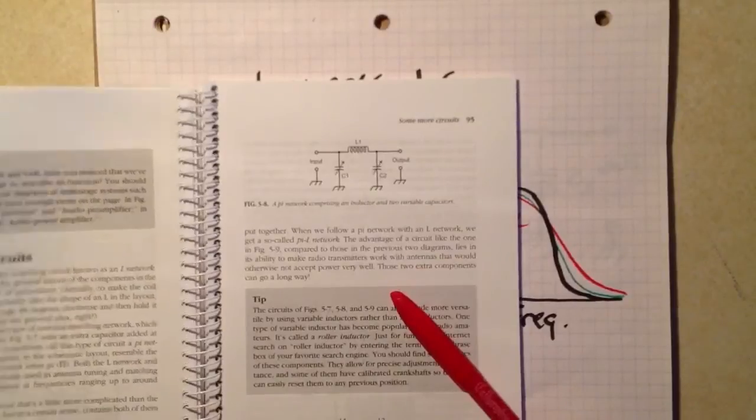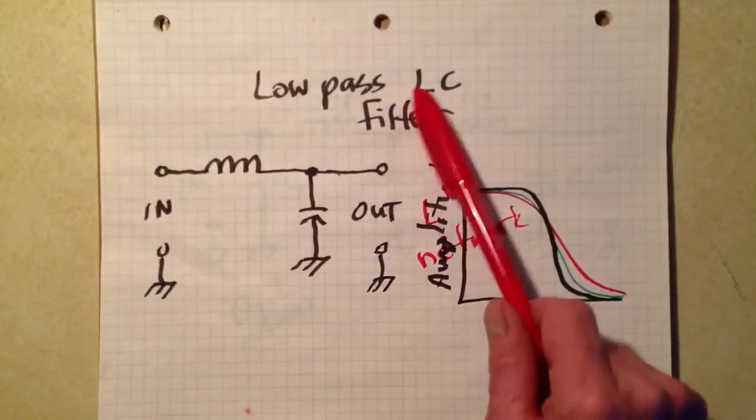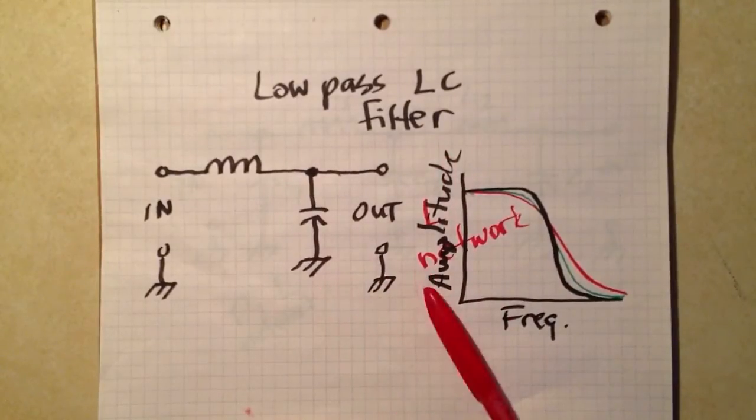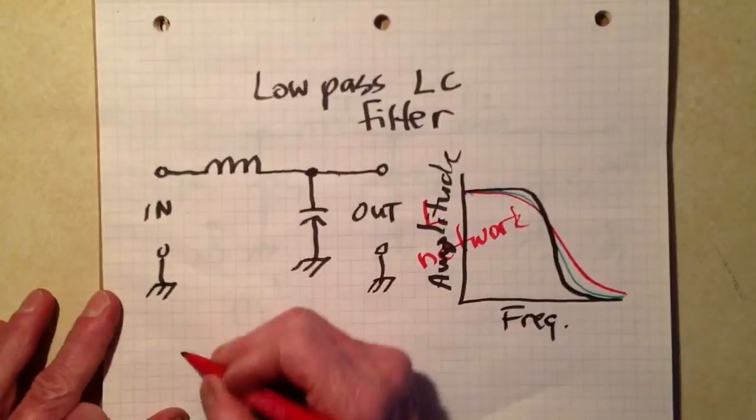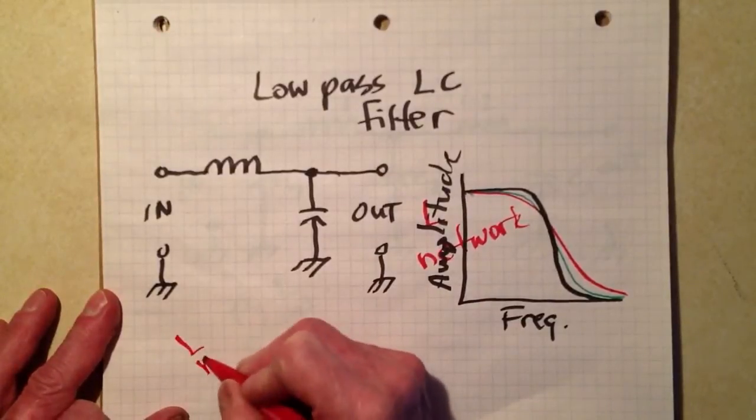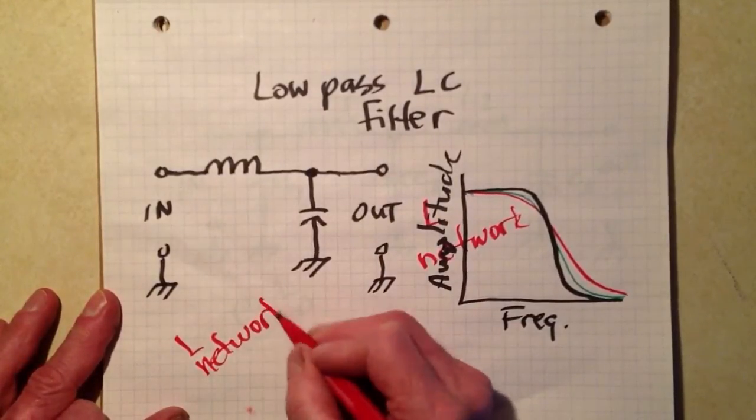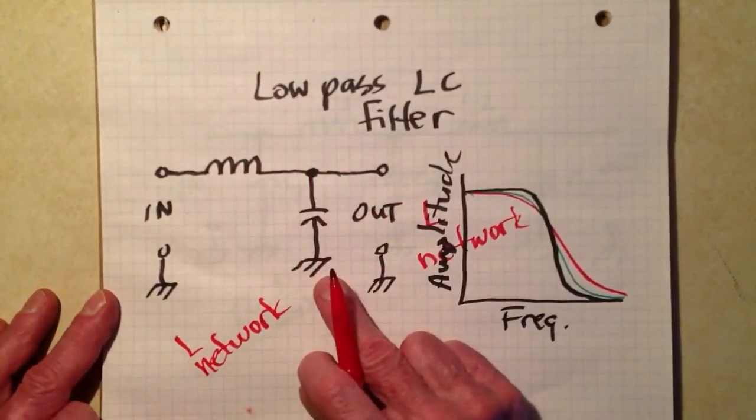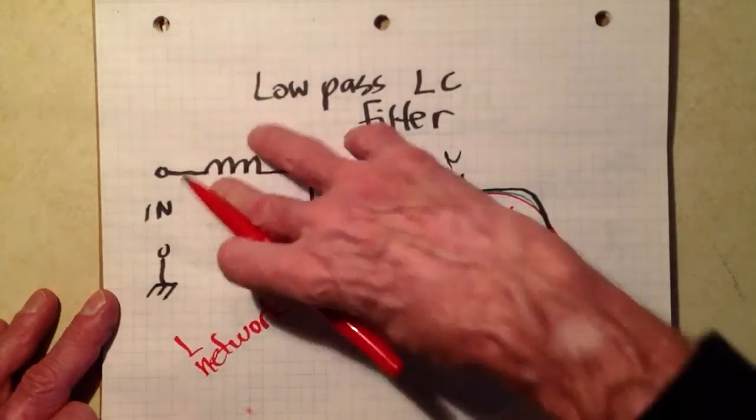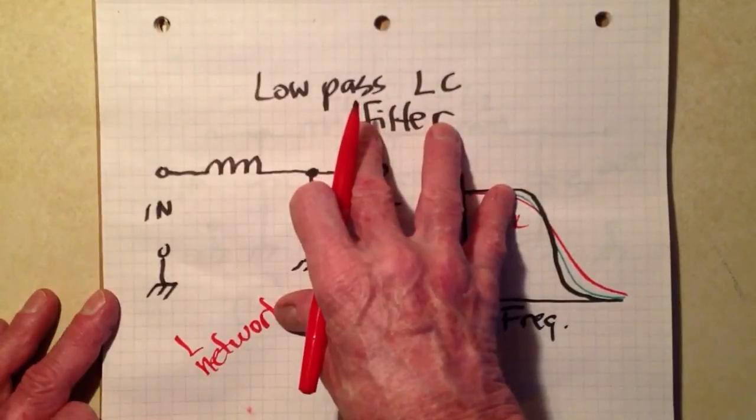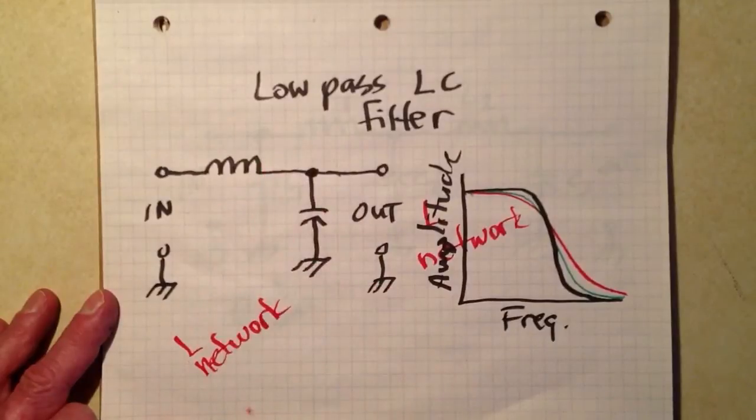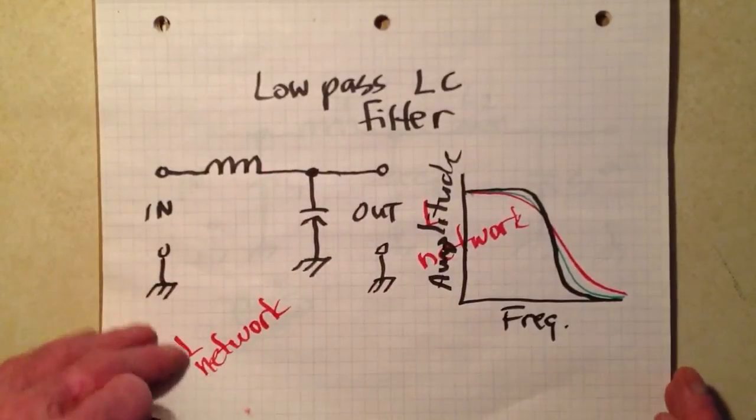What I showed you in the past video was a low-pass LC filter, starting out with what they would call an L network. Now, don't get this L confused with inductance. That's another thing here. It's because of the shape of the circuit configuration as it's drawn in the diagram. If you rotate this 90 degrees clockwise, then hold the page up, turn it around, look in a mirror, it will look like an L. That's why it's called an L network.